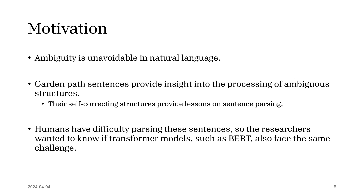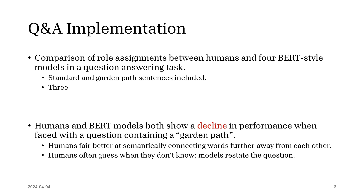The motivation is that ambiguity is unavoidable, and garden path sentences confuse humans a lot, so the researchers wanted to see if they would confuse BERT-type models too. To find out, they used a question answering task with various types of questions, comparing humans to models and models amongst themselves. There are four models: two BERT and two RoBERTa.